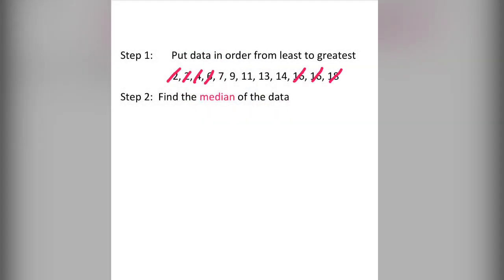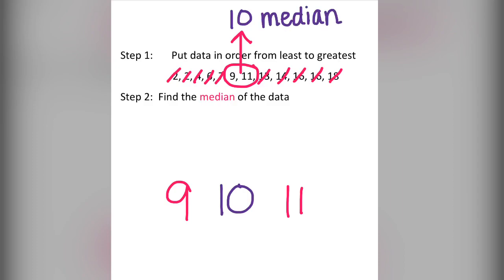Now what happens when we have data and there are two numbers in the middle? We've learned from finding median, we find the middle number. You can find the average, or you can locate the middle number, which in this case is 10. But how do we separate that data whenever we are doing the lower and upper quartiles?